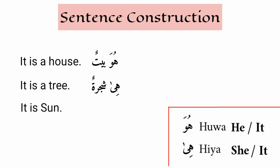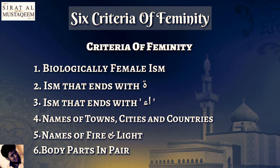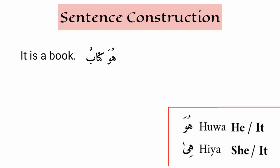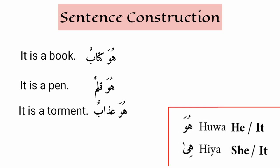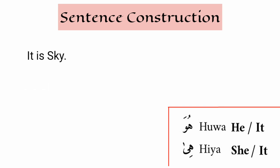It is the sun — hiya shamsun. Shams is feminine because it is a name of fire or light. It is the moon — huwa qamarun. Qamar is masculine because it doesn't fit any of the criteria of femininity. More examples: it is a book — huwa kitabun. It is a pen — huwa qalamun. It is a torment — huwa azabun. It is a sky — hiya samaun.